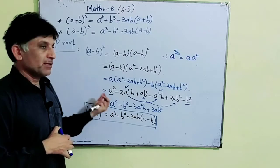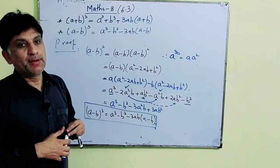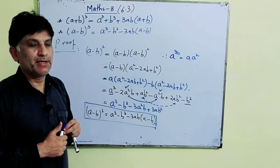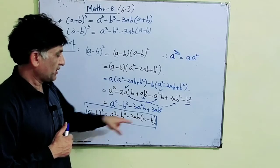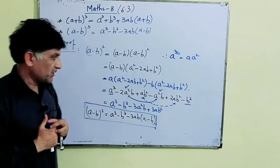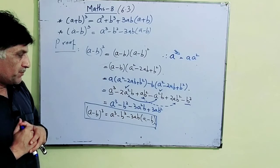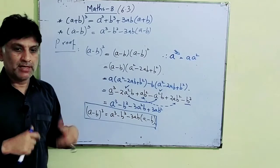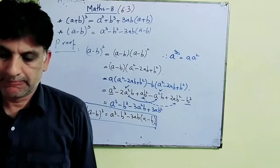Sometimes this also appears as a³ - b³ - 3a²b + 3ab². I hope the proof of both formulae is now clear to you. Now we will discuss some problems based on these formulae.